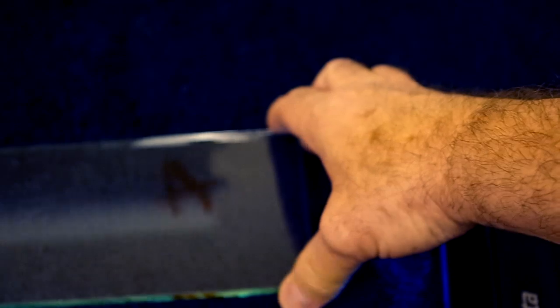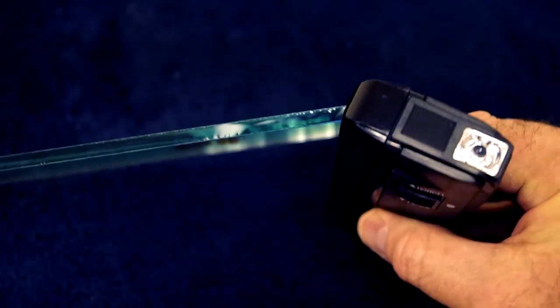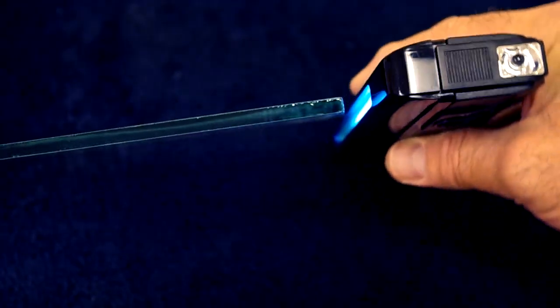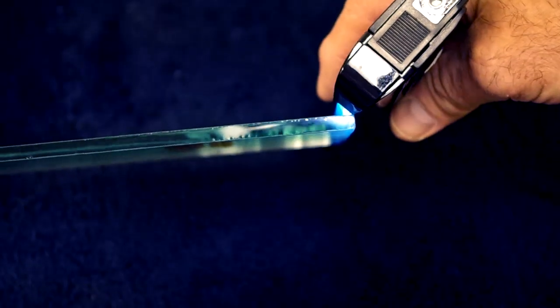All right, I have a piece of 3 sixteenths float. I've marked one side with an A, and what I'm going to do is I'm going to look at it on edge, and I'm going to roll the light, this is the front, and roll it around to the back, but I have to do this at an angle, so go ahead and turn off the lights please.